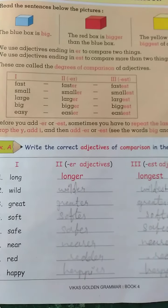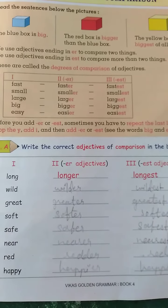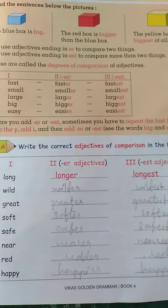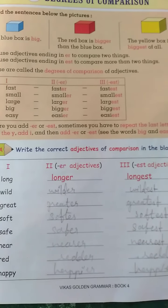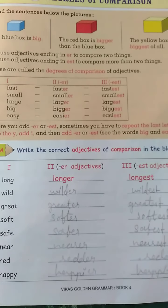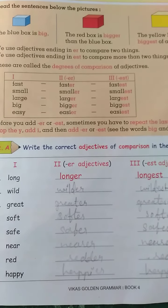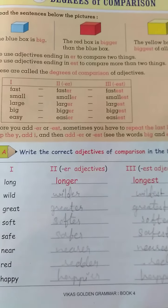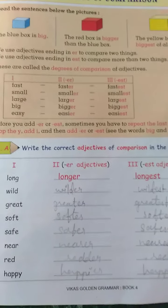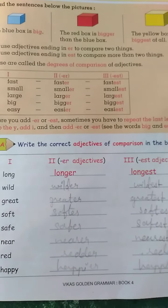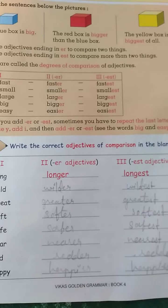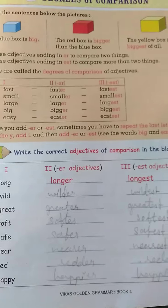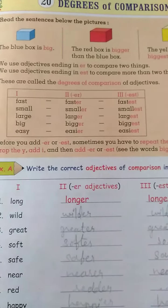Great, greater, greatest. Soft, softer, softest. Safe, safer, safest. Near, nearer, nearest. Happy, happier, happiest.